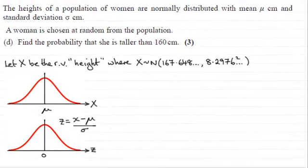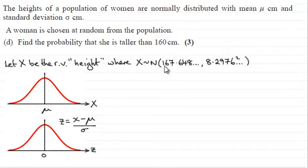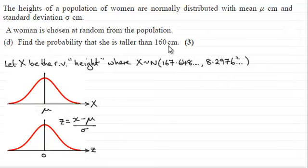For the last part of this question, we were told that the heights of a population of women are normally distributed with a mean mu and standard deviation sigma centimetres. We found that mu was 167.648 and the standard deviation sigma was 8.2976. A woman is chosen at random from the population, and we have to find the probability that she is taller than 160 centimetres.